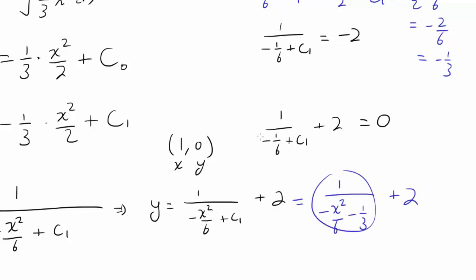And for this one, just to simplify it, we can multiply by 6 to top and bottom. Multiply by 6 to top and bottom, getting us 6/(-x² - 2) + 2. And we are done.